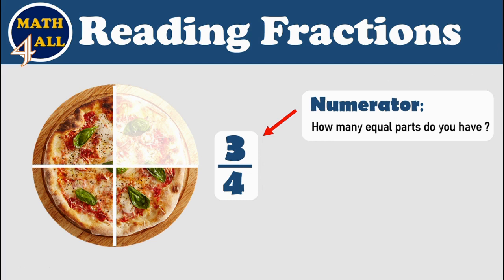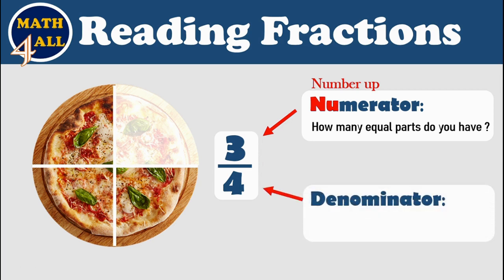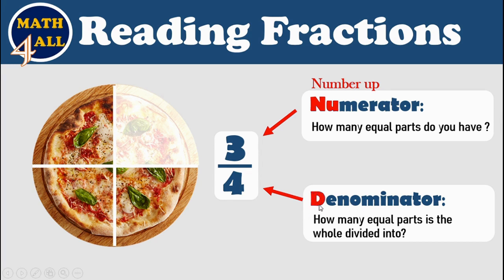Look at this word: the numerator starts with N-U, or 'number up,' so you have to remember numerator means number up. What about number down? We call it the denominator. The denominator means how many equal parts the whole is divided into. Look here: one, two, three, four — so the one whole is divided into four parts.